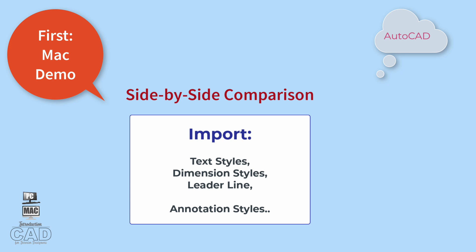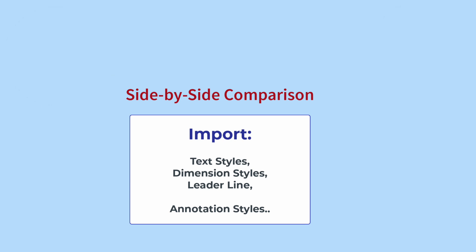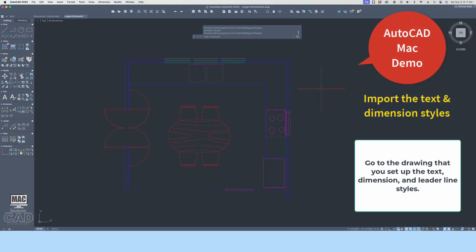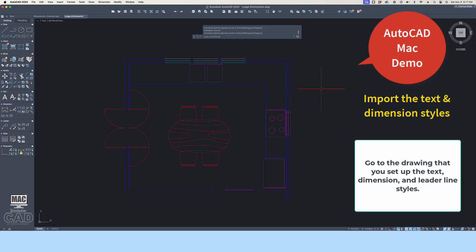This process will be first demonstrated in the AutoCAD Mac version, followed by the same demonstration of importing styles in the PC AutoCAD format. First, we will look at the process of importing text, dimensions, and leader line annotation styles through the AutoCAD Mac format.